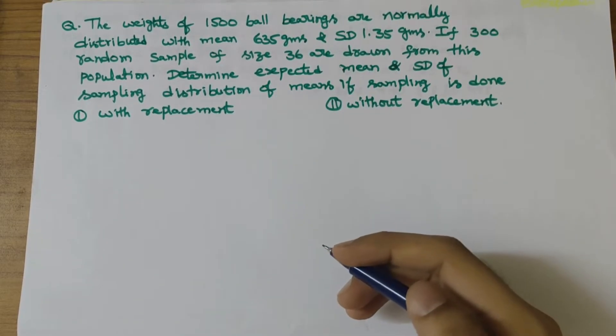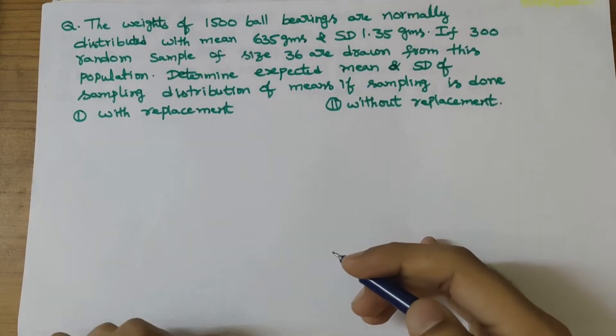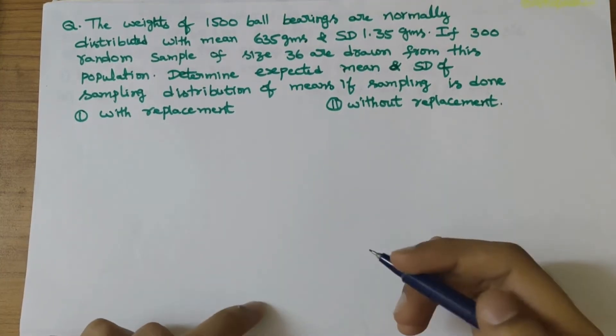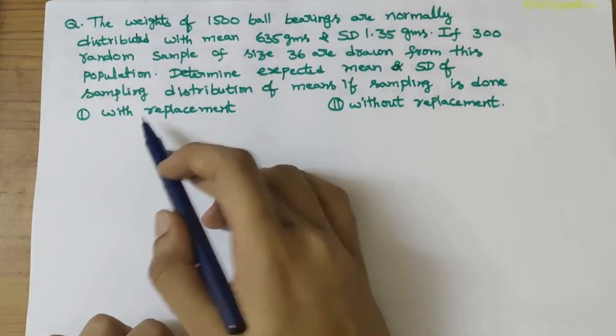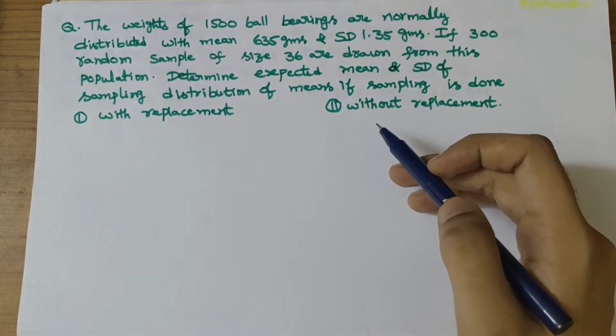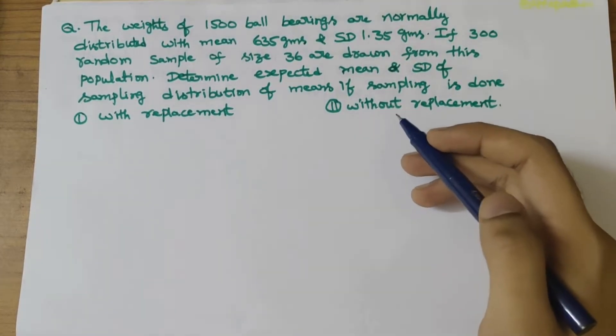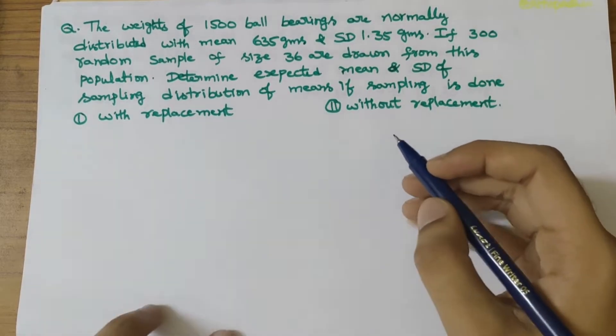If 300 random samples of size 36 are drawn from this population, we need to determine the mean and standard deviation with replacement and without replacement. This question is straightforward and you can solve it easily.